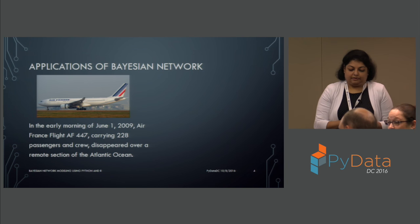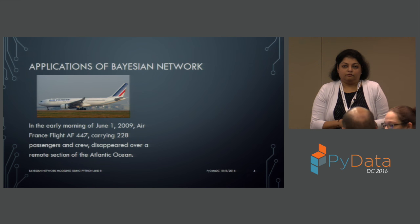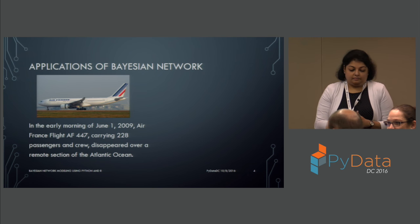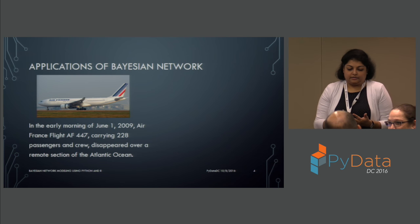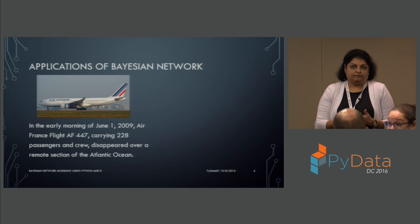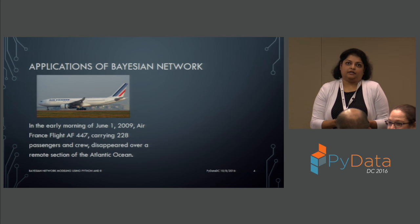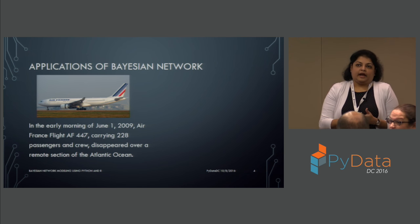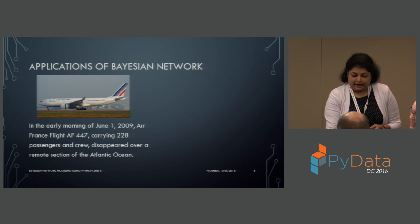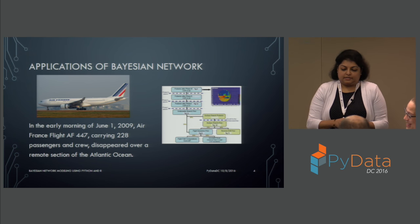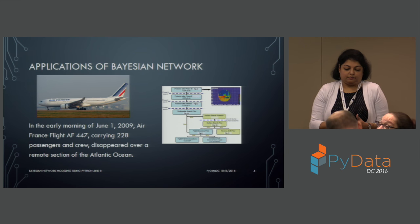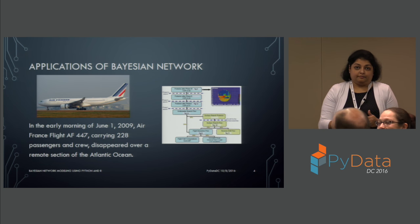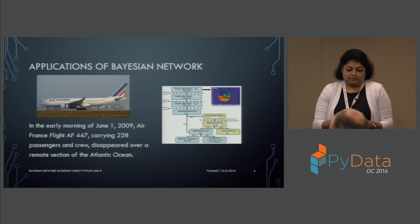The very first application is a somber example. In the early morning of June 1, 2009, Air France Flight AF447 went missing with 228 passengers and crew over the Atlantic Ocean. They tried multiple techniques and could not figure out the location of the debris, but later decided to try Bayesian network modeling and it worked successfully. The model used involves multiple parameters with prior and posteriors — we'll cover those terms later.